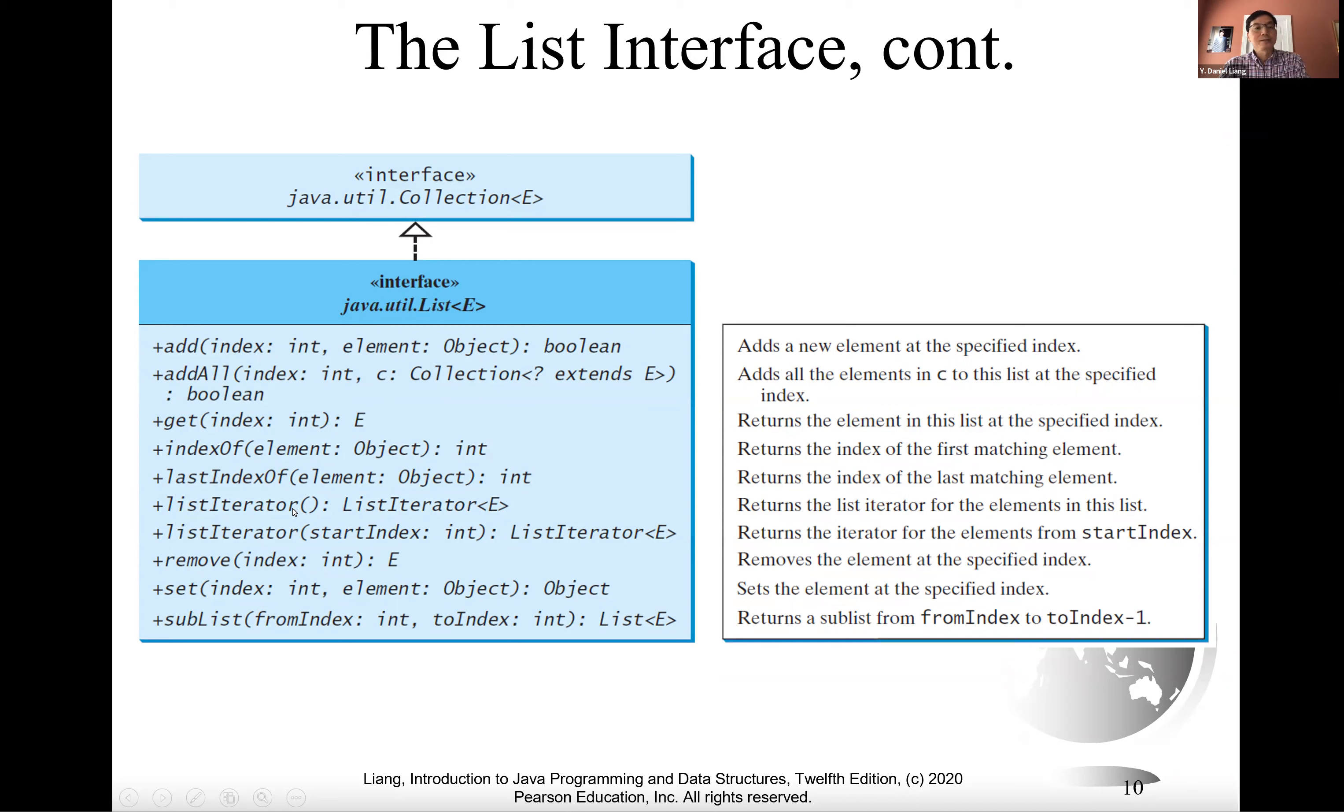List iterator, list iterator with a starting index, remove an element at the given index, and set a new element at this given index. Sub-list from the starting index to the ending index. Now when you look at all these methods defined in the list interface, you're going to see the common theme is index. This is the notion for the list - you can access and manipulate elements in a list using index.